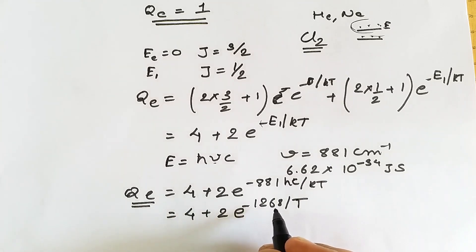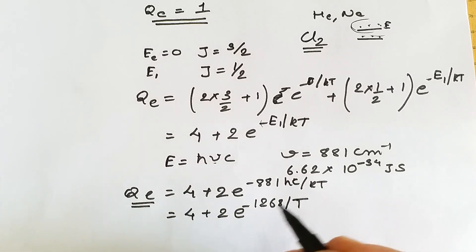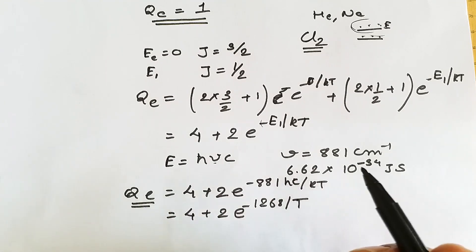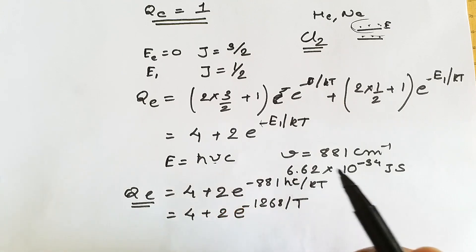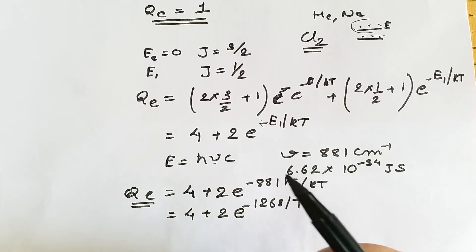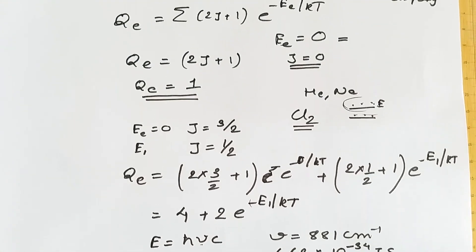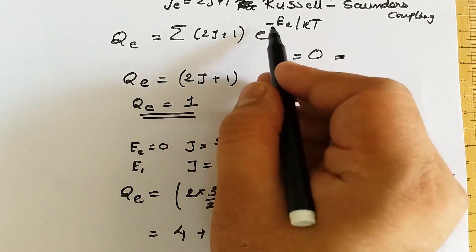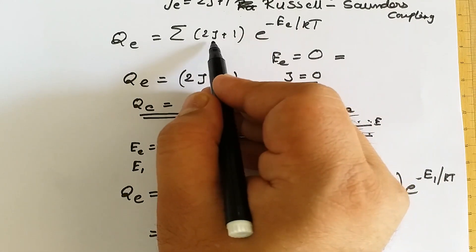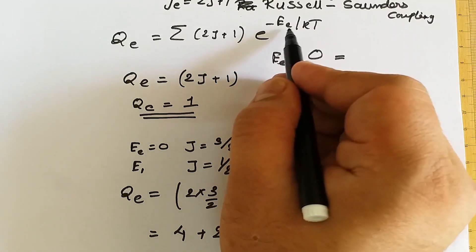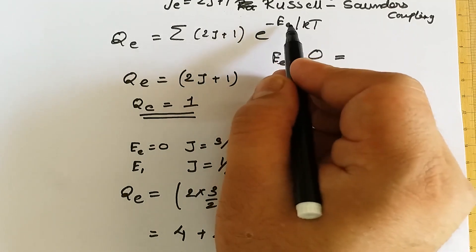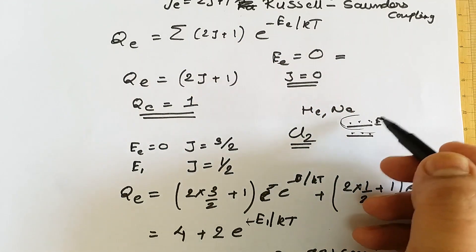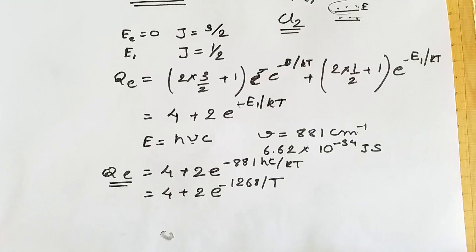For different atoms, we consider the angular momentum quantum number J and the energy, and from both we calculate the individual electronic partition function. In general, the electronic partition function is written as q = summation of (2J+1) e^(−e/kT), where J is the angular momentum quantum number and e is the electronic energy, which depends on electronic transitions of the molecules from the ground state to higher energy levels.